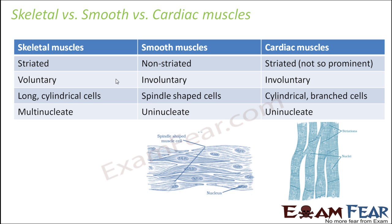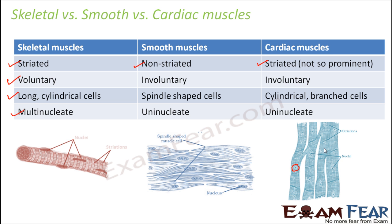Let us have a quick comparison between the three types of muscle tissues — skeletal, smooth, and cardiac. Skeletal muscles are striated with alternate dark and light bands; smooth muscles are non-striated; cardiac muscles are striated but not prominently so. Skeletal muscles are voluntary; smooth and cardiac muscles are involuntary. Structure-wise, skeletal muscles are long cylindrical multinucleate cells; smooth muscles are spindle-shaped uninucleate cells; and cardiac muscles are cylindrical branched uninucleate cells — a cylinder-like structure with one nucleus per cell and branching off to give another cylinder-like structure.